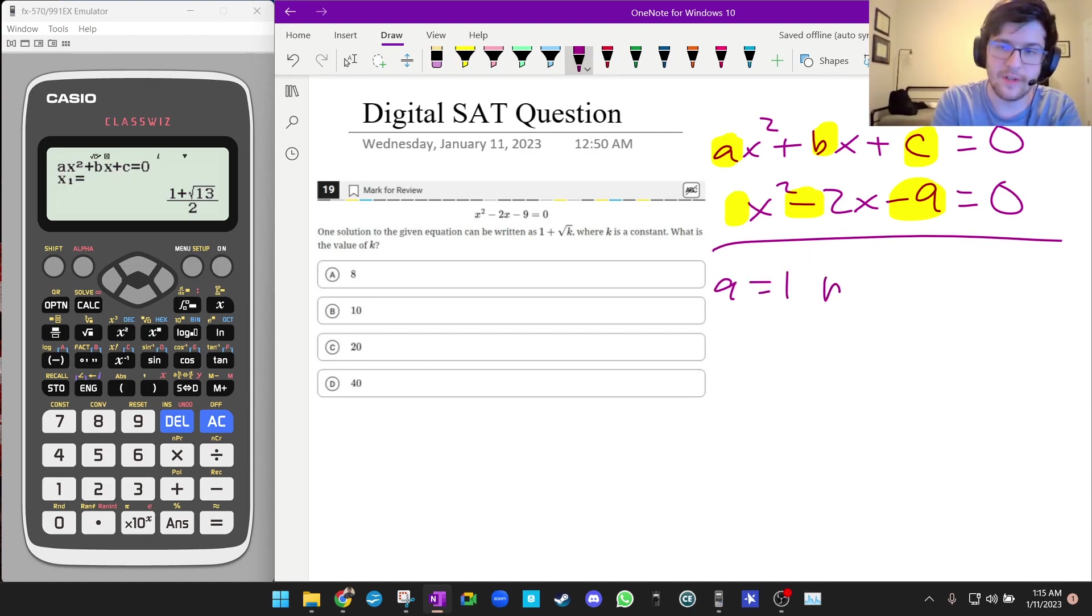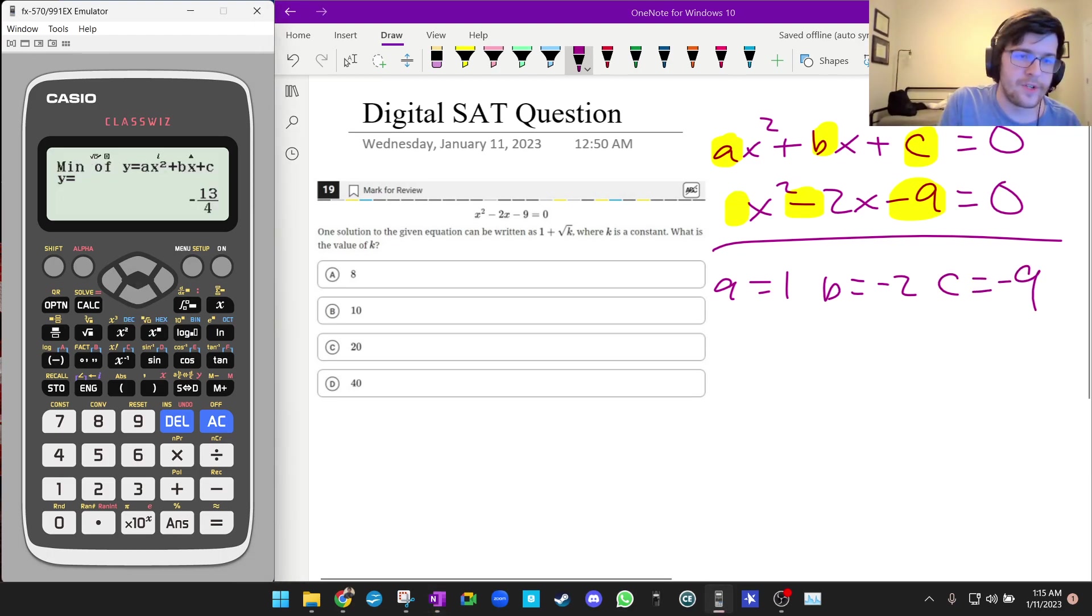Let me jot that down. A is 1, B is -2, and C is -9. You either go through the menu or click to the bottom and press enter. You can do 1, enter, -2, enter, and -9, enter. Now if we press enter, we get 1 + √10 and 1 - √10.